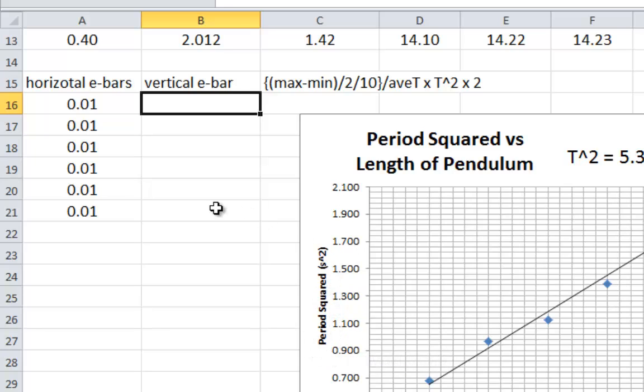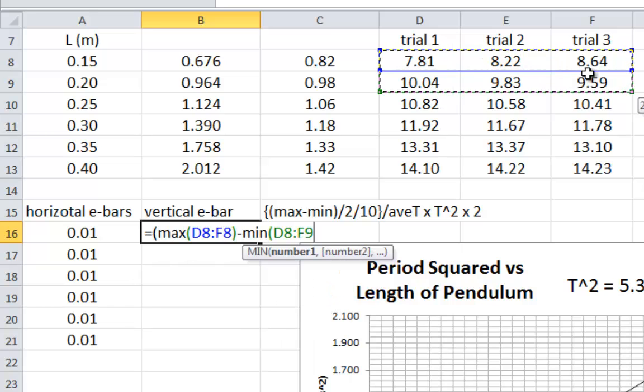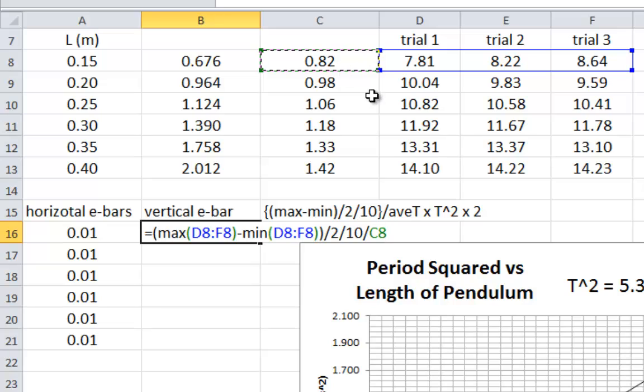You need to eventually track the uncertainty for the things you're graphing. Here we graphed the period squared. In Excel, it looks like this. So we've got to be able to see what we're looking at up here. So here we go. Regular bracket. Max. Regular bracket. Select the three numbers. Close bracket. Minus. Min. Bracket. Select the three numbers. Close bracket. Close all those brackets again. Divide by 2. Divide by 10. Divide by your average T. That's right here in column C. Then you multiply. That's a star. By your T squared. That's right here in column B. And finally you multiply it by 2.